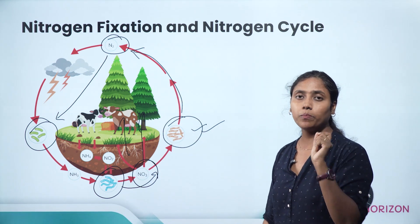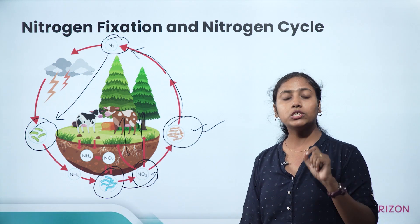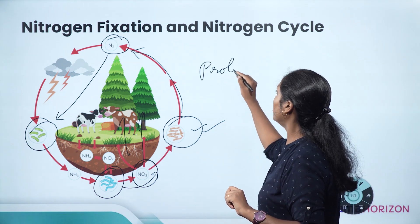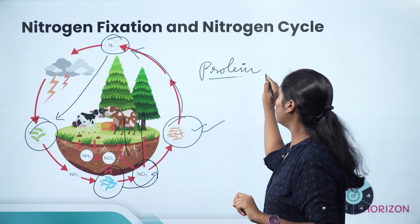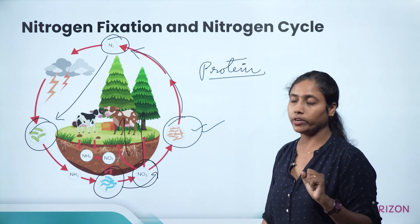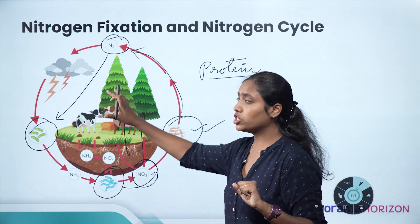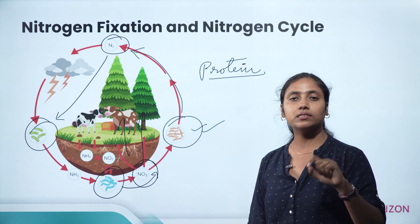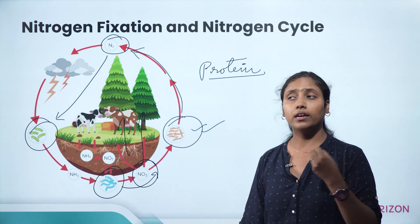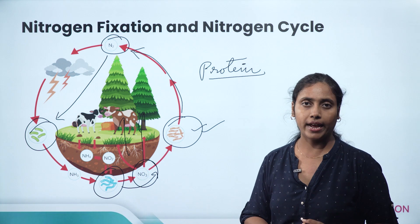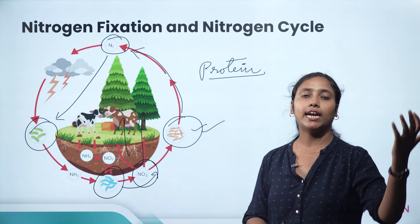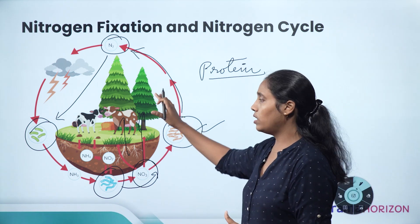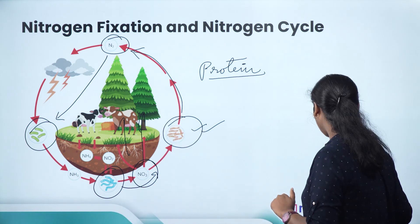Nitrogen is very important for plants and animals because it helps in the production of protein. Once nitrogen is absorbed by plants, consumers — including humans — get nitrogen by consuming plants. We cannot take atmospheric nitrogen directly, nor can we use soil nitrate — we get nitrogen only through plants.